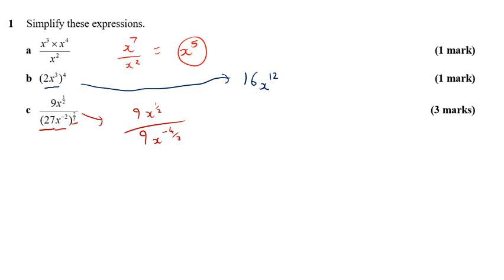Now, after that, in terms of working out the answer, we are doing this 9 and this 9 can cancel out with each other. So the bit we're left with is x to the power of 1 half divided by x to the power of negative 4 thirds.